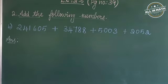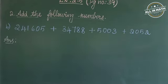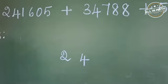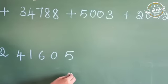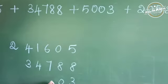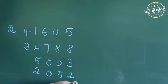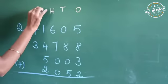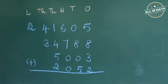Look at the B sum: 2,041,605 plus 34,788 plus 5,003 plus 2,052. First, we are going to write all the given numbers in order starting from the 1's place. Now add the numbers since the 1's column.